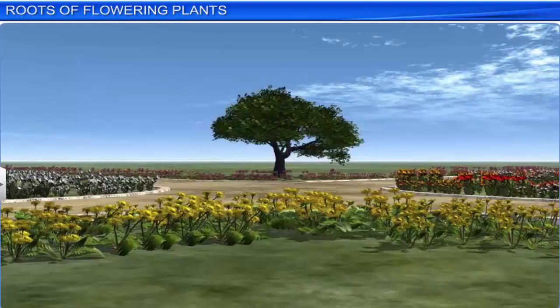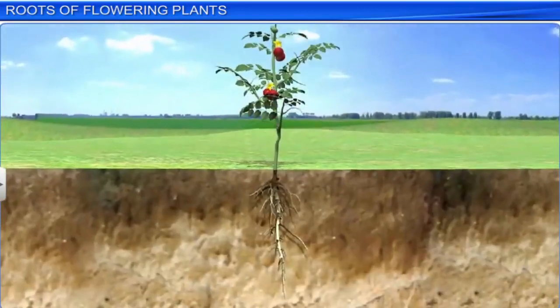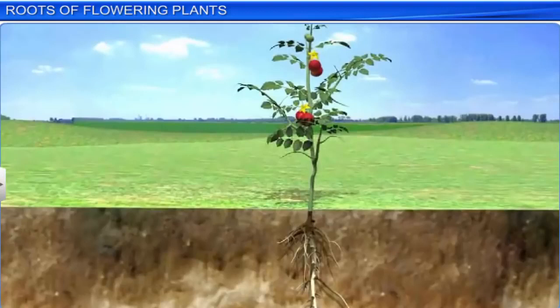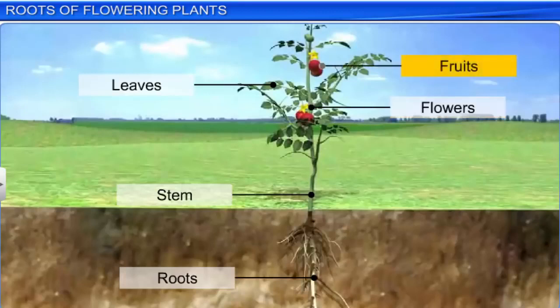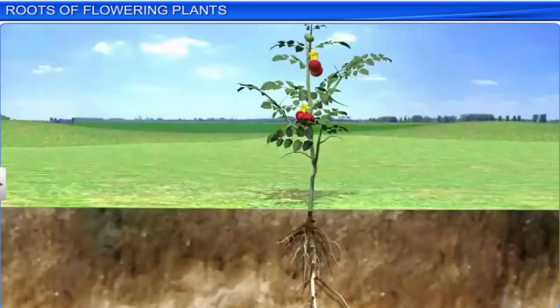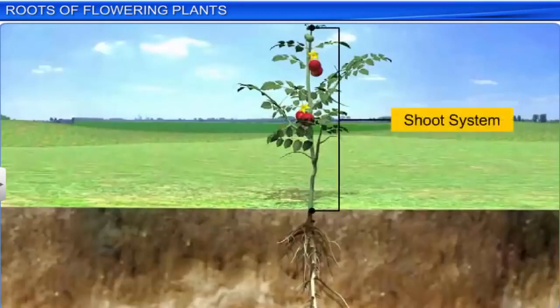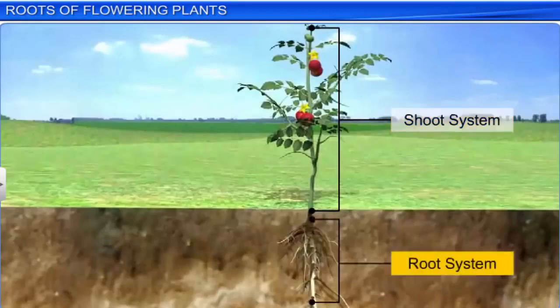Flowering plants or angiosperms are one of the most diverse groups of plants found on our planet. Although there are variations in their external structure or morphology, all of them are characterized by the presence of roots, stems, leaves, flowers and fruits. The portion of a flowering plant above the ground is termed as the shoot system, while the portion below the ground is termed as the root system.